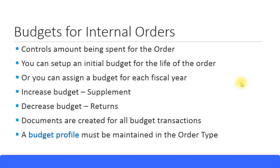You can assign the initial budget just for the overall life of the order without splitting into fiscal years. If you feel the budget amount is not enough and need to increase it, you have the option of increasing it. In SAP, the term used is 'supplement' — similar to vitamin supplements — meaning an additional or additive amount. The transaction code for this is called budget supplement, and using the supplement function you can increase the budget.